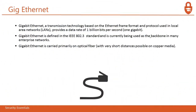Next is Gig Ethernet. Gig Ethernet is a transmission technology based on the Ethernet format and protocol used in local area networks, providing a data rate of 1 billion bits per second. It is defined in the IEEE 802.3 standard and is currently used as the backbone in many enterprise networks. Gigabit Ethernet is carried primarily on optical fiber, as very short distances are only possible on the copper medium.